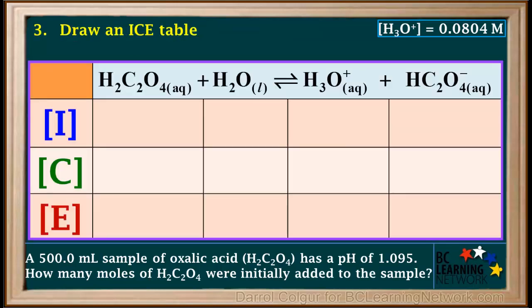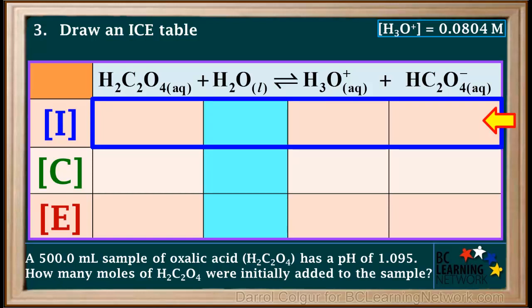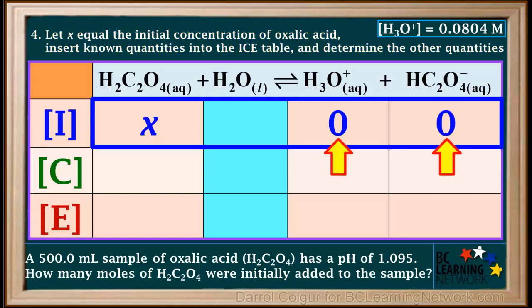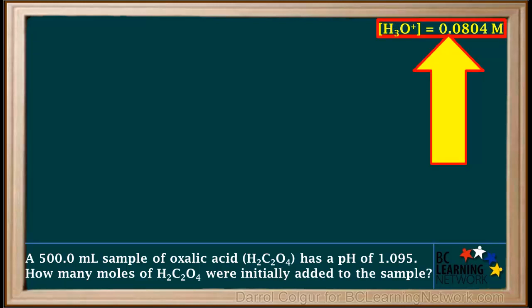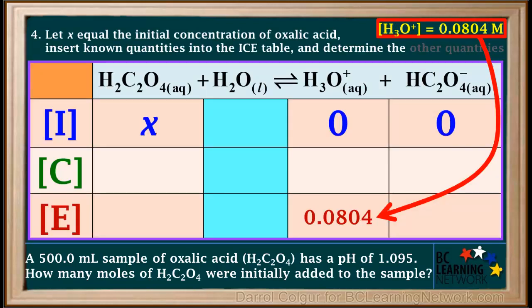Now we draw an ICE table below the equation and add a grid so that the columns line up with the substances in the equation. Water is a liquid, so we ignore its values — we color its column blue here. We start by adding what we can to the initial concentration row. We don't know the initial concentration of oxalic acid, so we let it equal X. Before ionization, the concentrations of hydronium and hydrogen oxalate ions are zero. Using the pH, we had determined that the hydronium ion concentration at equilibrium is 0.0804 molar.